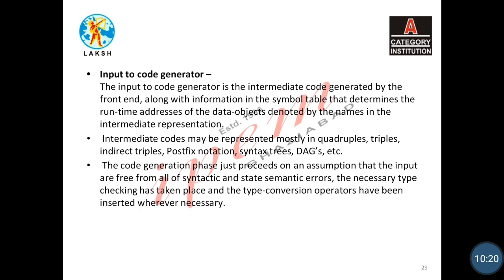The first issue is input to the code generator. The input to the code generator is the intermediate code generated by the front end, along with information in the symbol table that determines the runtime address of the data objects denoted by names in the intermediate representation. So the input for the code generator is the intermediate code generated by the front end and the symbol table, which is used in every phase of the compiler.